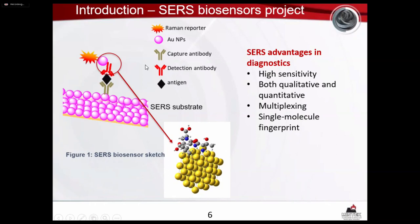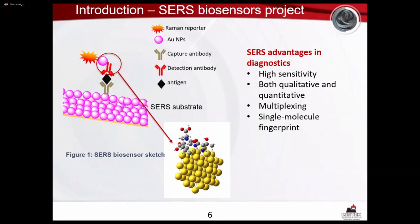By detecting the fingerprints of the SERS tag, we can indirectly confirm the presence of the antigen. That's the traditional structure of the SERS biosensor. The reason we chose this approach, in addition to other diagnostic approaches, was its various advantages: high sensitivity, both qualitative and quantitative detection capability, multiplexing capability, and single molecular fingerprinting.